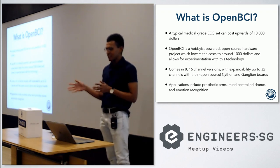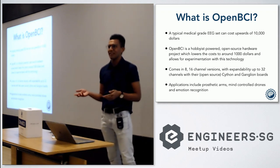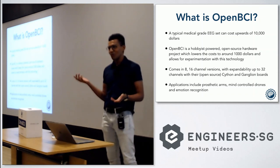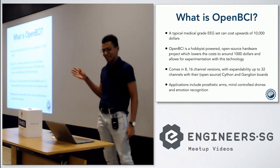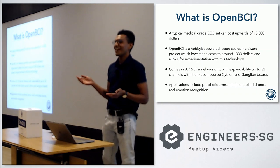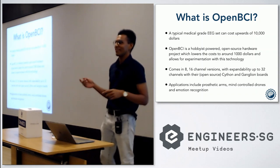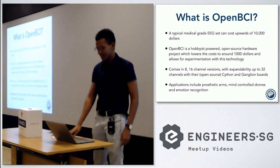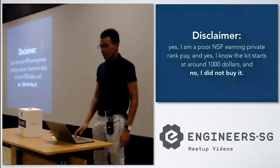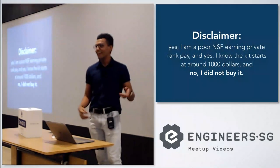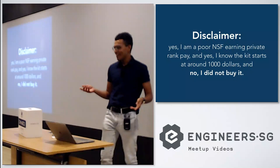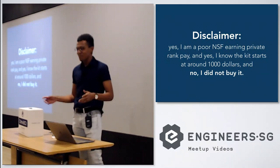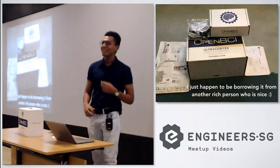Applications for OpenBCI include things like prosthetic arms, mind-controlled drones — which I'm currently working on, not really sure how that's going to go, but it might be cool — and also emotion recognition. You can use your sensors to figure out what a person is feeling. To be clear, I'm a poor NSF earning private rank pay, so I know the kit starts at about $1,000 and I didn't buy it — a rich person bought it for me.